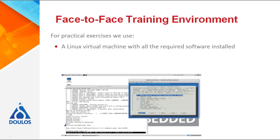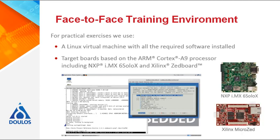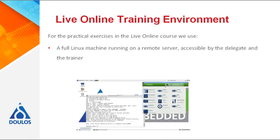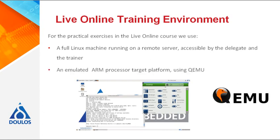For face-to-face training, we use a pre-configured Linux virtual machine as a development environment on the host, so we don't waste any time waiting for software to install. For the practicals, we use targets which feature an ARM Cortex-A9 CPU. Everything we cover is very generic, though, and can easily be applied to other systems and targets. For the live online version of the training, we use a similar host development environment, but this time installed on a remote server. This allows the delegate and the trainer to access the host, making it easy to help with practicals and discuss specific points. Desktops can be shared between the delegate and the trainer and with the whole group, which provides a very inclusive learning environment. For the target, we use a QEMU-based system, which is an emulated ARM processor that behaves in exactly the same way as a real CPU, meaning that the vast majority of the practicals are identical to those in the face-to-face version.